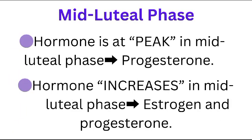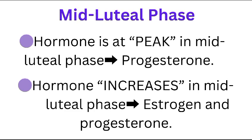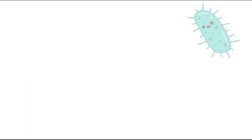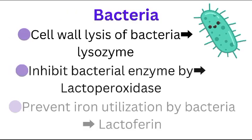The hormone that is at peak in the midluteal phase is progesterone. The hormones that increase continuously in the midluteal phase are estrogen and progesterone.